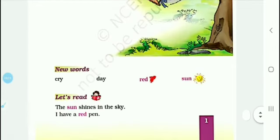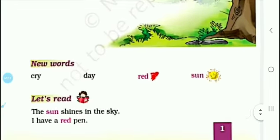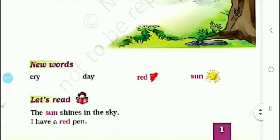Now the next topic is new words. You have to learn the new words of this lesson. The first new word is 'cry' — that means rona. Second is 'day' — day ka matlab hai din. Third is 'red' — red ka matlab hai laal, that is a color. And the last one is 'sun' — sun ka matlab hai suraj.